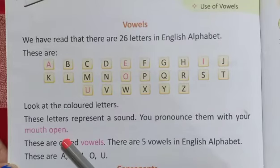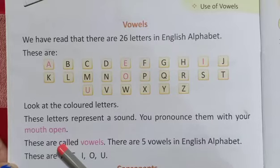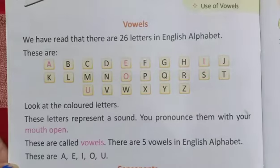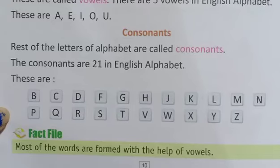Aur ismein tongue niche touch nahi hoti hai. Do you understand? How many vowels? A, E, I, O, U. There are 5 vowels in English alphabets.